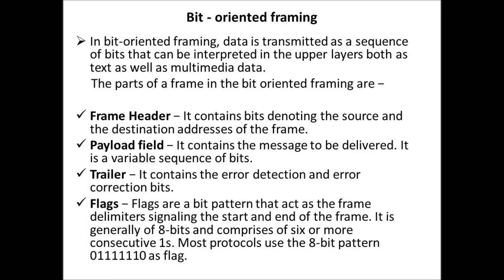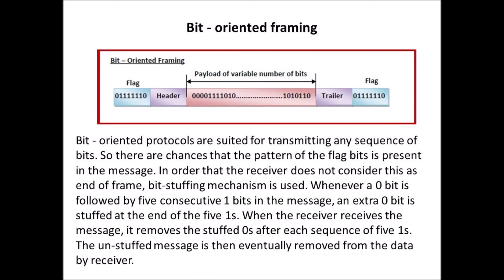The flag is placed at the start and end of each frame. Bit-oriented protocols are suited for transmitting any sequence of bits, so there are chances that the pattern of the flag bits is present in the message. In order that the receiver does not consider this as end of frame, a bit stuffing mechanism is used. Whenever a zero bit is followed by 5 consecutive one bits in the message, an extra zero bit is stuffed at the end of the five ones.